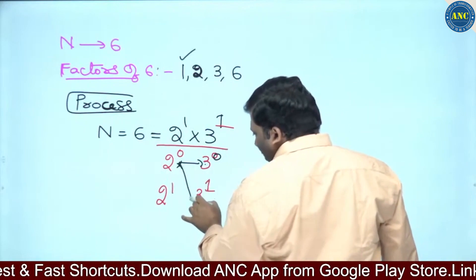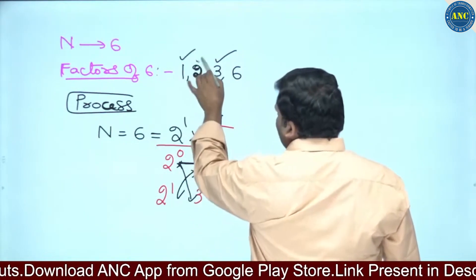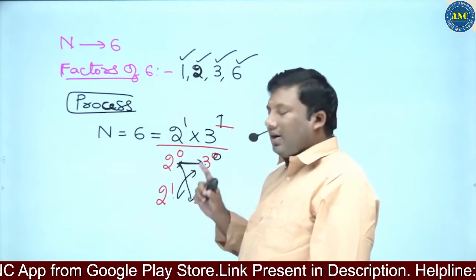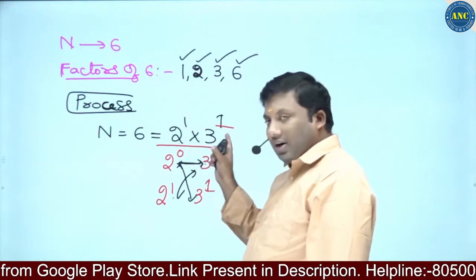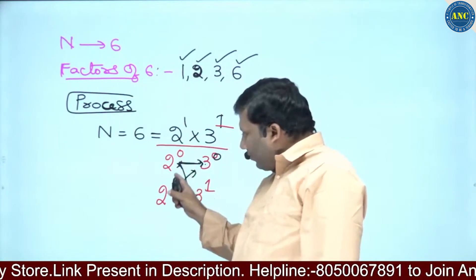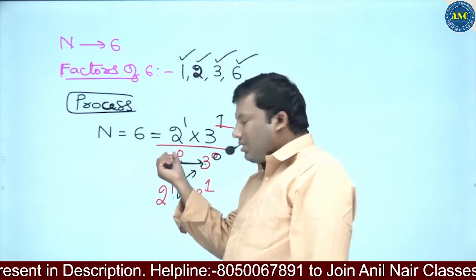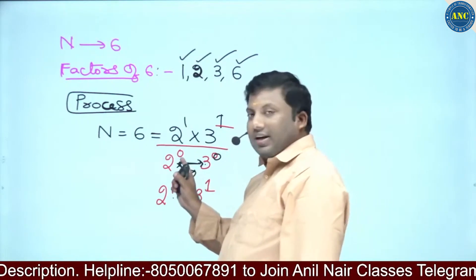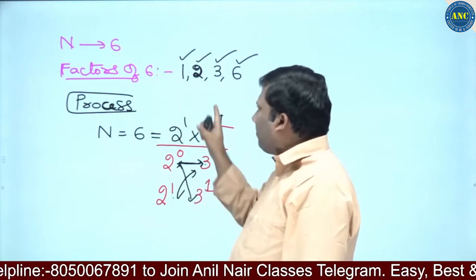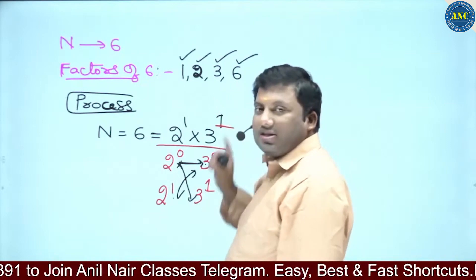Continuing the combinations: 2⁰ × 3¹ = 1 × 3 = 3, which is a factor of 6. Then 2¹ × 3⁰ = 2 × 1 = 2, which is a factor of 6. And 2¹ × 3¹ = 2 × 3 = 6, which is a factor of 6. Every power of 2 multiplied with every power of 3 gives a factor.